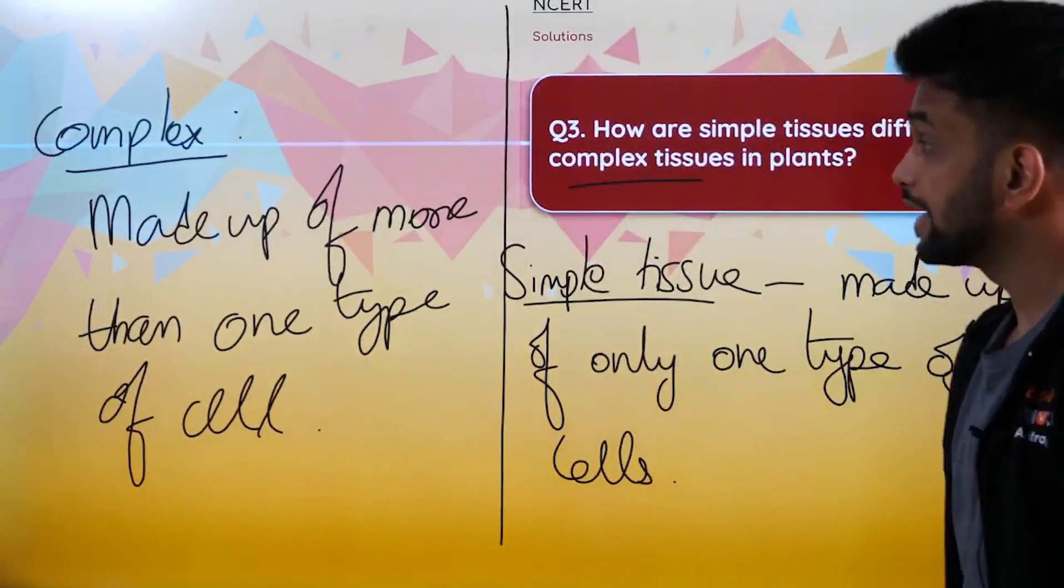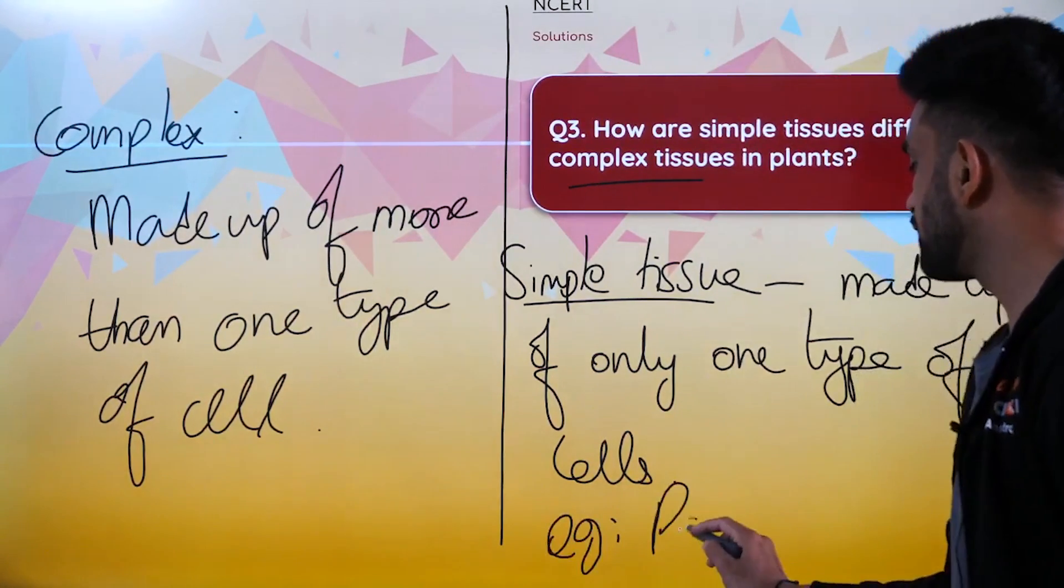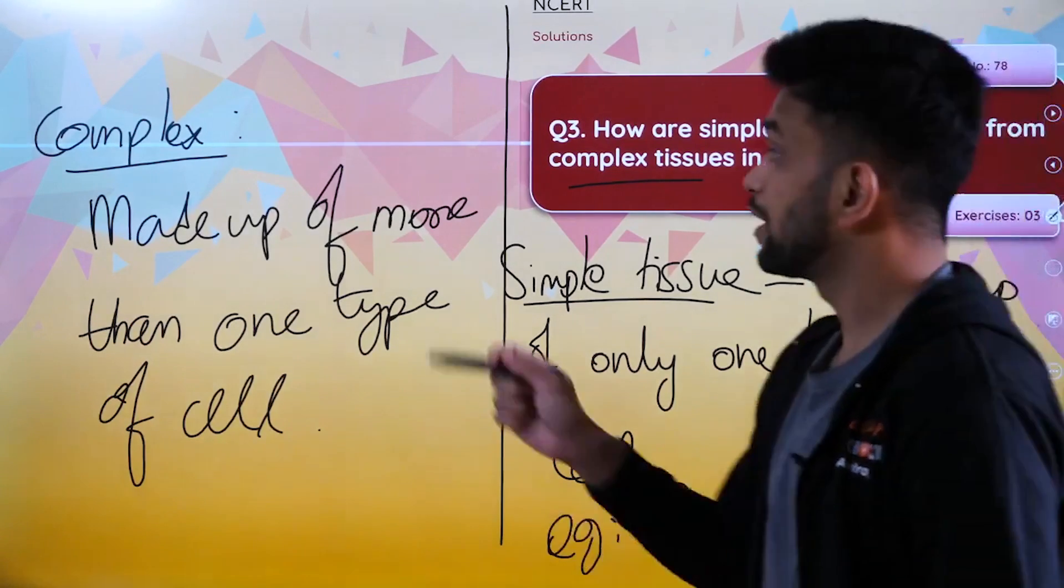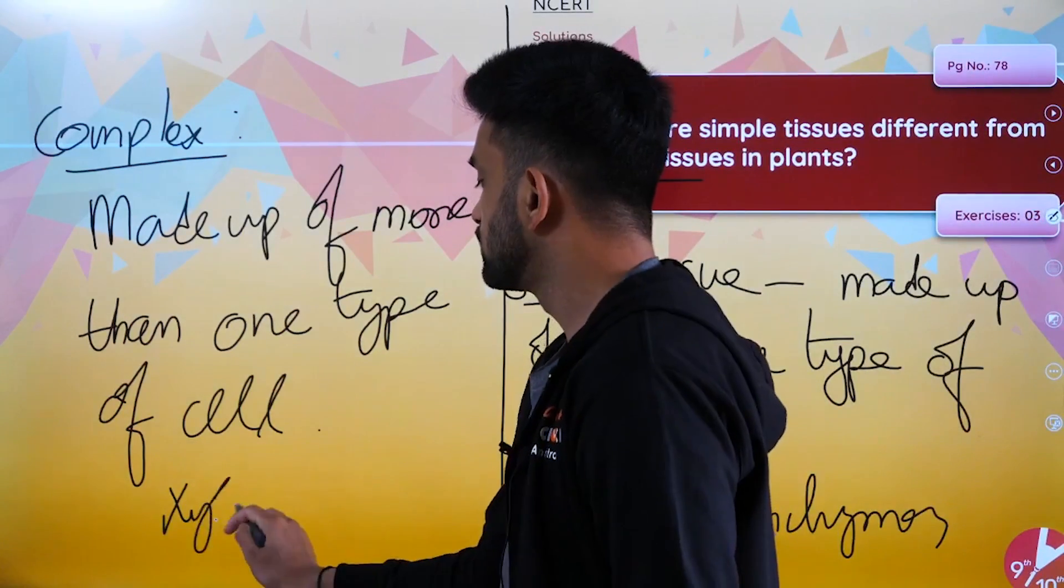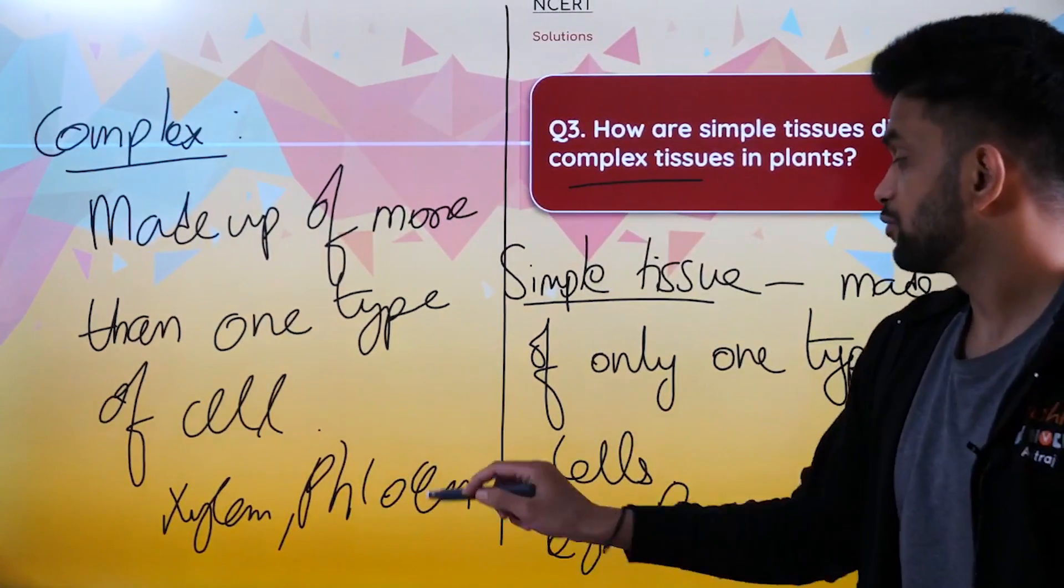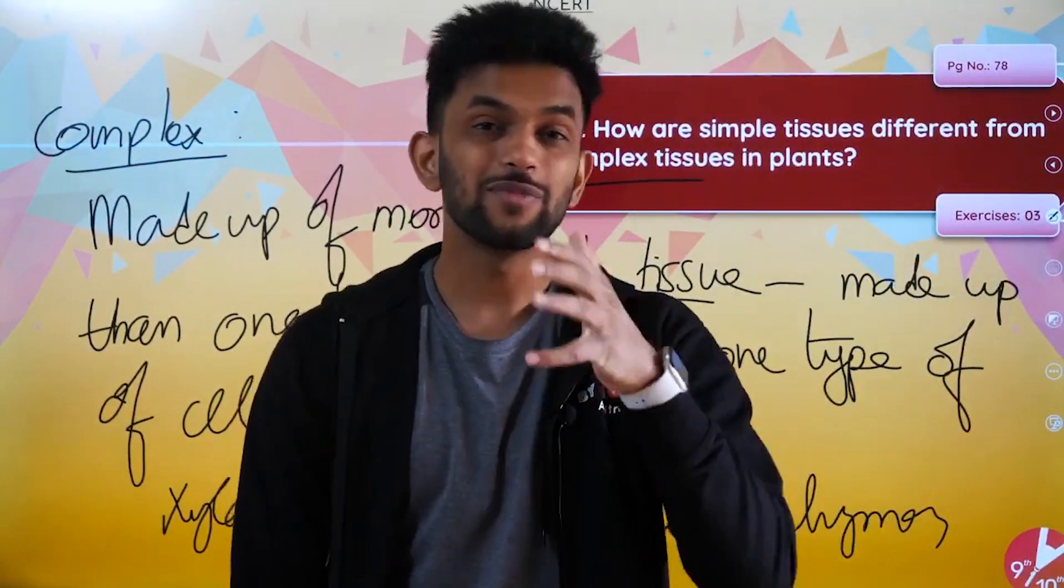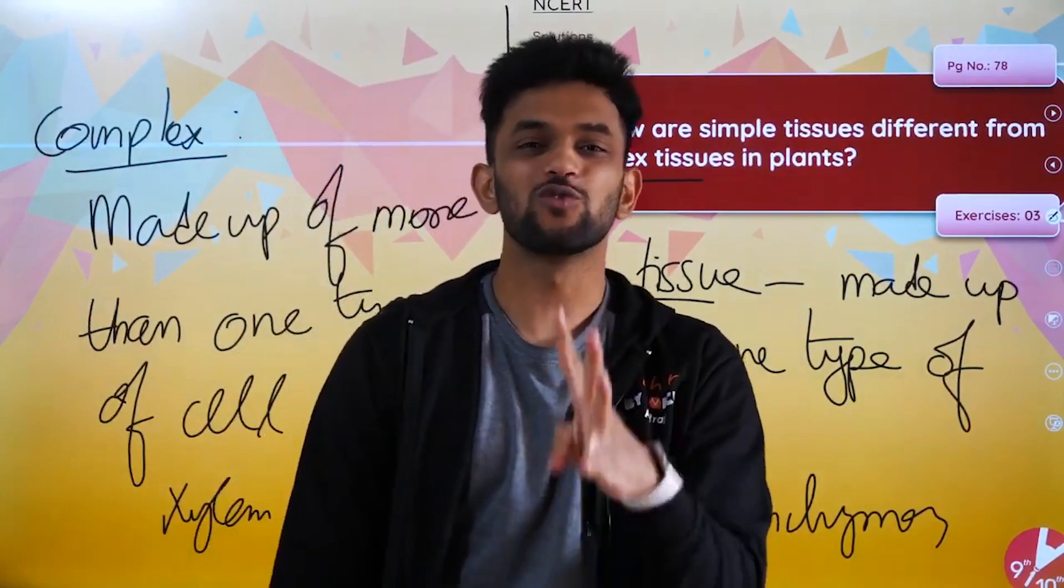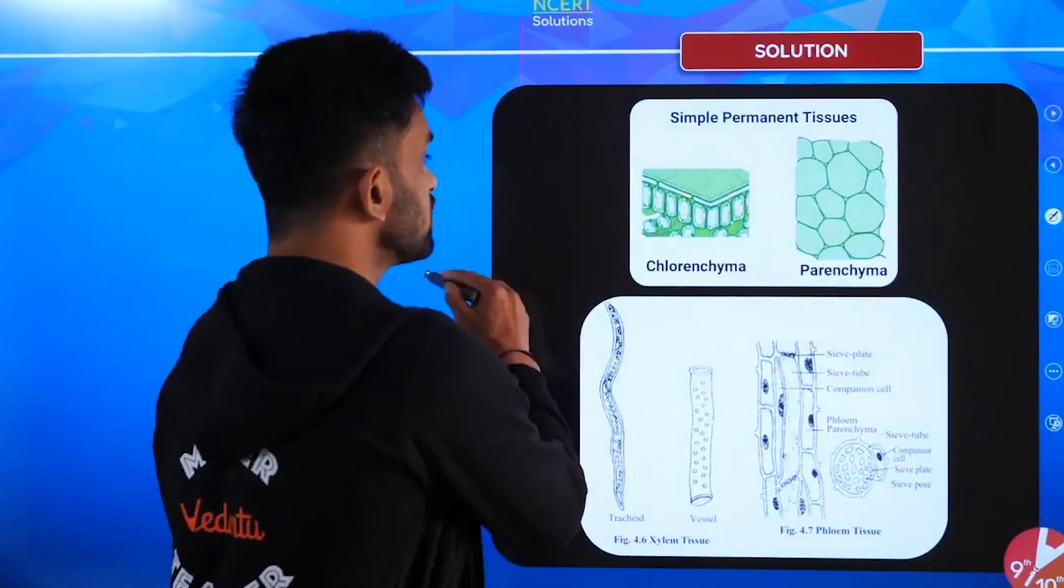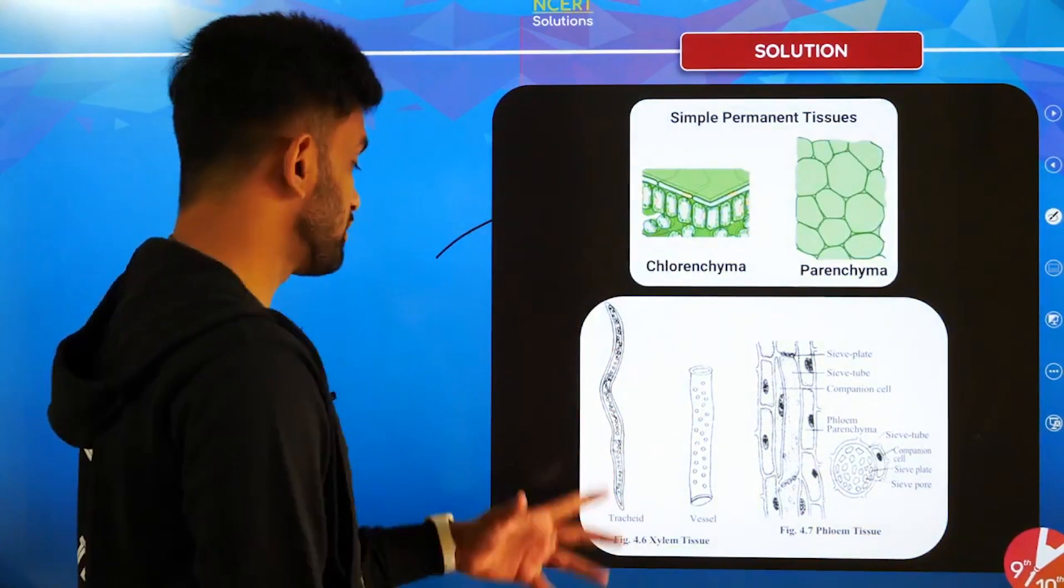This is the answer. But we have to write examples. Examples of simple tissues are parenchyma, collenchyma, and sclerenchyma. Examples of complex tissues are xylem and phloem. Xylem handles transportation of water and minerals; phloem handles transportation of food.